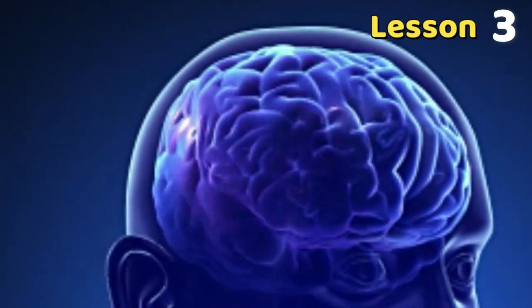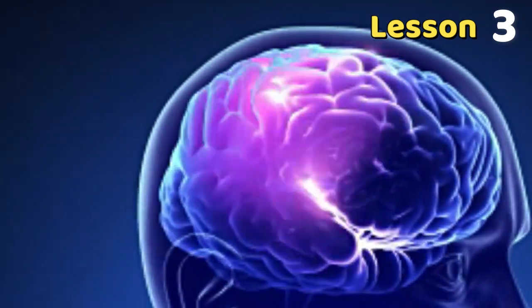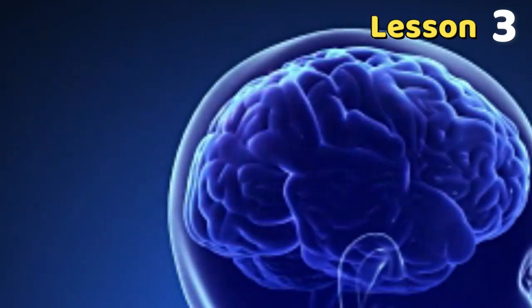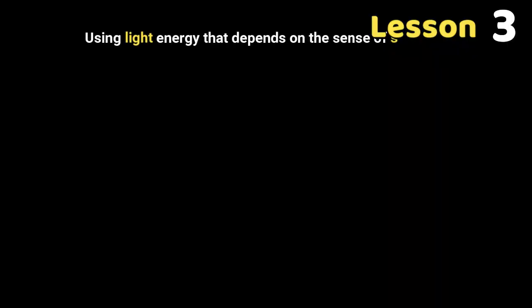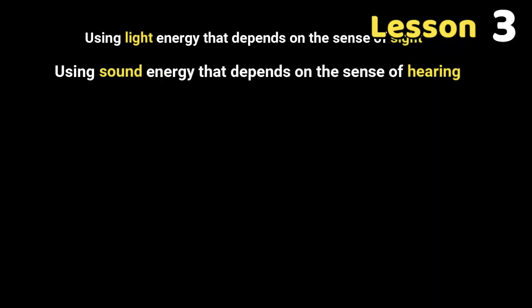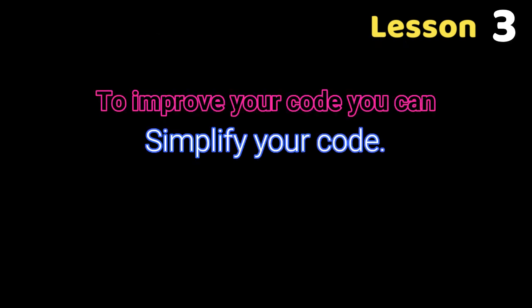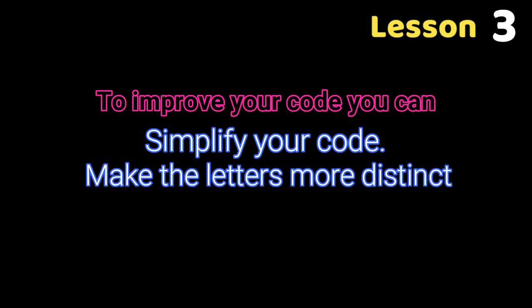We can send encoded messages to communicate with each other through different ways: using light energy that depends on the sense of sight, or using sound energy that depends on the sense of hearing. To improve your code, simplify it and make the letters more distinct.